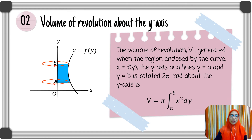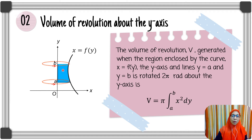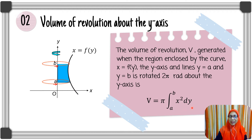Next, the volume of revolution about the y-axis. The volume V generated when the region enclosed by the curve x = f(y), the lines y = a, y = b, and the y-axis is rotated through π radians about the y-axis is given by V = π times the integral of x squared with respect to y from y = a to y = b.